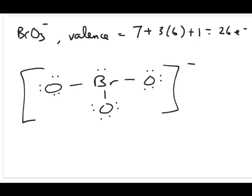Now let's calculate formal charges quickly. For each oxygen on the left: six minus one (half of the one bond's two electrons) minus six equals negative one. The second oxygen at the bottom gives the same result: six minus one minus six equals negative one. The third oxygen on the right is also the same: six minus one minus six equals negative one.